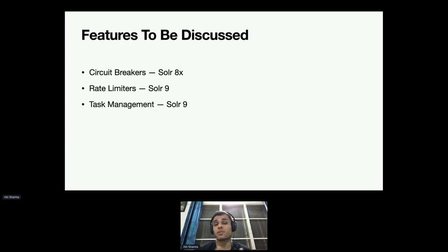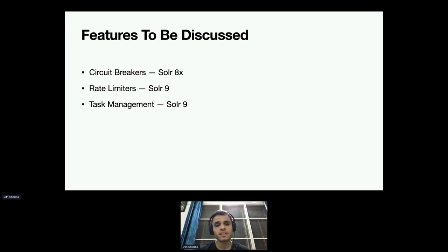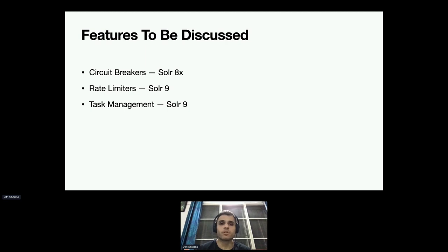Rate limiters will be part of Solr 9 — something crucial for dynamically defining different quotas for different request types, most importantly search and indexing. Then we'll talk about task management, an elaborate feature that gives visibility into the active workload in your cluster, the ability to manage it, and control the tasks actually running. We'll also cover future work planned for these features and other resiliency features being worked on.